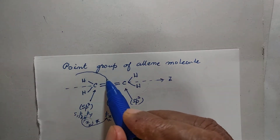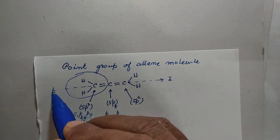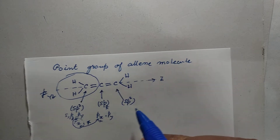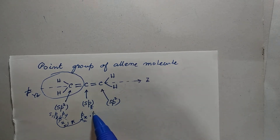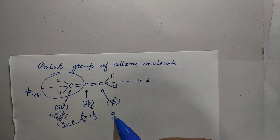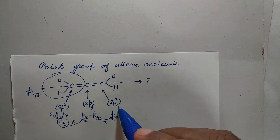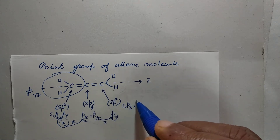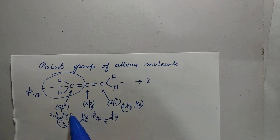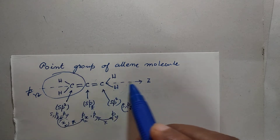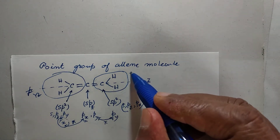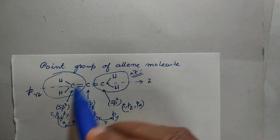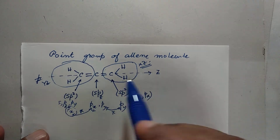This part of the molecule is in the yz plane. Similarly here, the pi bond is formed between the py orbital of this carbon and the unhybridized py orbital of the central carbon. So the sigma orbitals here are formed by hybridization of s, pz, and px orbitals. Pz is common because this line is the Z axis. So this part of the molecule is on the xz plane. This side is the yz plane and this side is the xz plane — the two planes are perpendicular to one another.